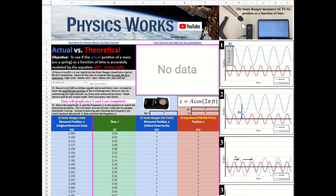But when we hit collect on the sonic ranger, the mass was just bobbing up and down, and it may not have been right at its maximum amplitude the moment we hit collect. So we need to find that first maximum and subtract all the data points so that it starts at its maximum just like the cosine function does.